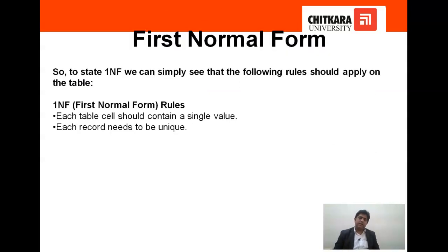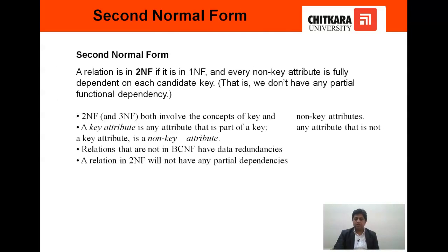To state the rules of 1NF, each table cell should contain a single value, and each record needs to be unique. Now we talk about second normal form. If you want to make a higher normal form, the table should already be in the previous normal form. So when defining 2NF or second normal form, a table is in 2NF if it is in 1NF and every non-key attribute is fully dependent on each candidate key. That means we do not have any partial functional dependency.